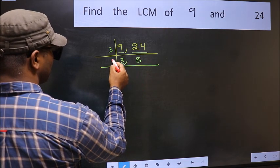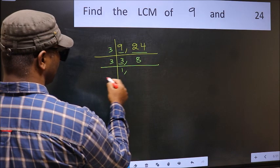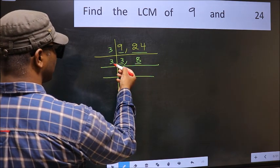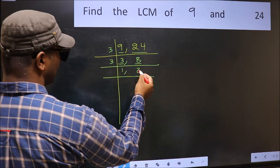Now here we have 3. 3 is a prime number, so 3, 1 is 3. The other number, 8, not divisible by 3, so you write it down as it is.